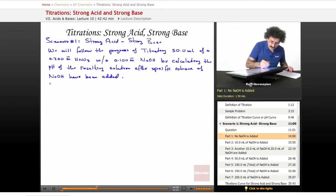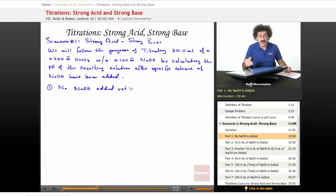So let's go ahead and start with our initial situation. Our initial situation is no NaOH added yet. So with no sodium hydroxide added yet, all we have is this 50 milliliters of a 0.2 molar HNO3 solution. Well, the HNO3 is a strong acid. We want to calculate the pH of this solution.